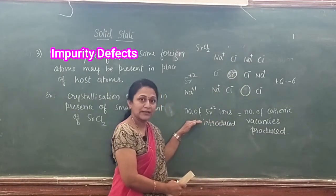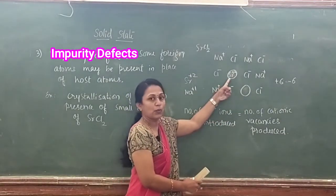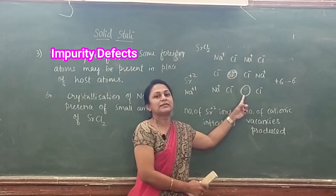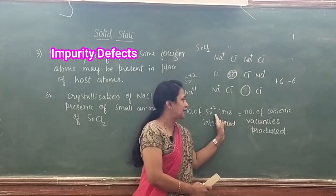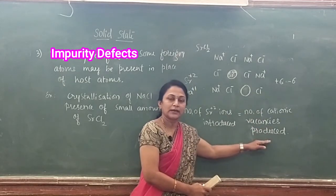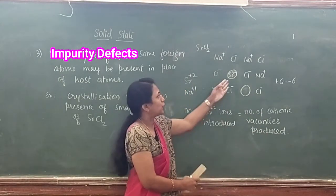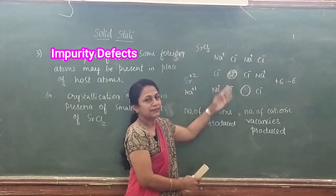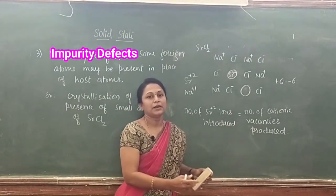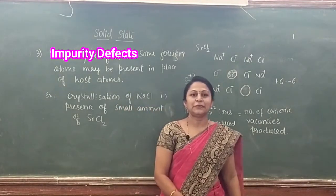The number of Sr²⁺ ions introduced equals the number of cationic vacancies produced. If one Sr²⁺ is introduced, one cationic vacancy is produced. If two Sr²⁺ ions are introduced, two cationic vacancies will be produced. Thank you.